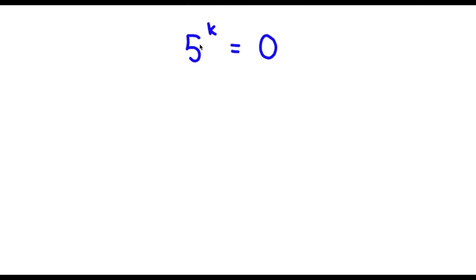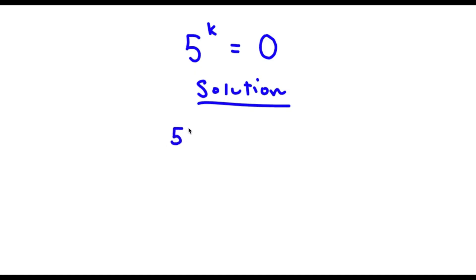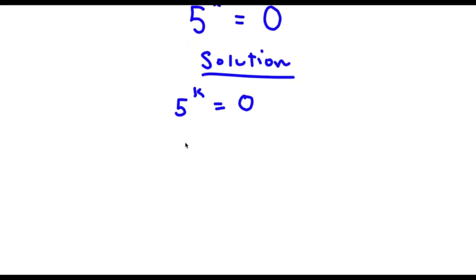Alright, so for bonus problem 1 we have 5 to the power of k is equal to 0. For a solution, we start with 5 to the power of k is equal to 0, then I'm going to take the log on both sides. So now I have log of 5 to the power of k is equal to log 0.